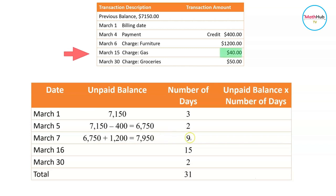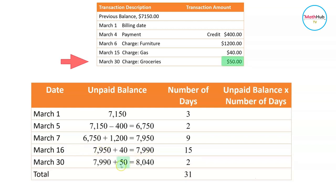A new charge of $40 was added to the account after nine days, so the new balance beginning March 16th was 7,990. Then a new charge of $50 was added to the account on March 30th, so beginning March 30th the new balance is 7,990 plus 50, which equals 8,040. To get the average daily balance we will multiply the number of days at each unpaid balance by that unpaid balance.